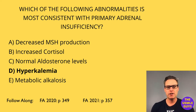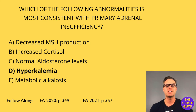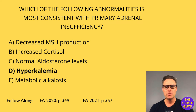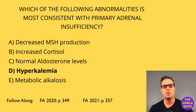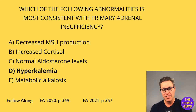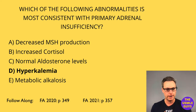Secondary adrenal insufficiency results from decreased pituitary production of ACTH, and because there's no elevation in ACTH, we don't see the same hyperpigmentation as in primary adrenal insufficiency. We also see preservation of aldosterone synthesis, and therefore potassium levels are normal.